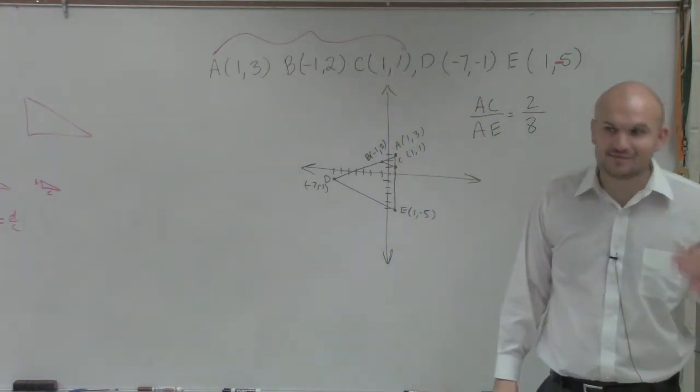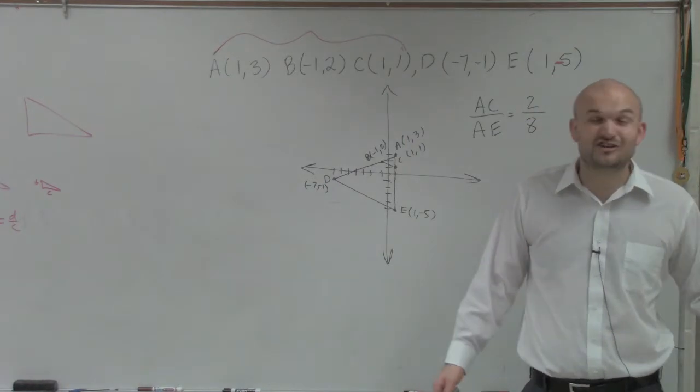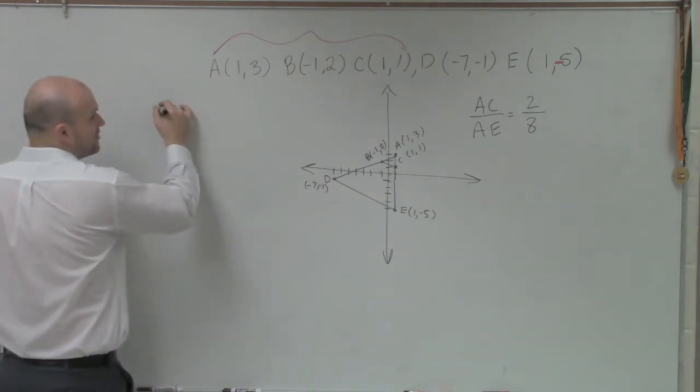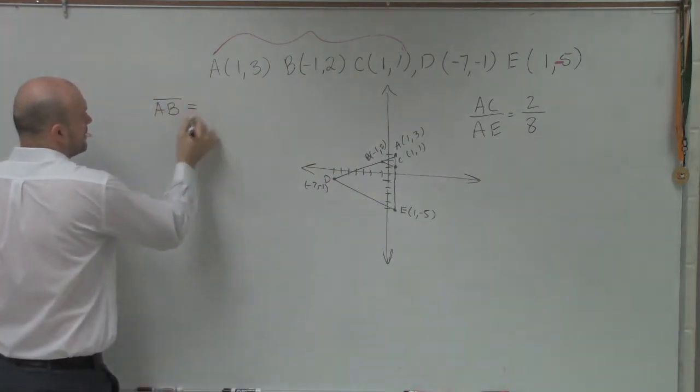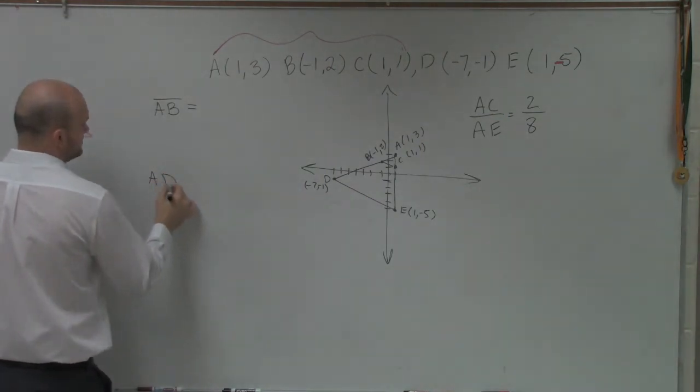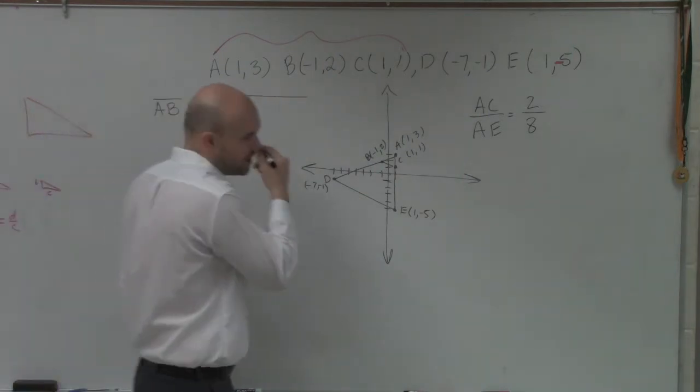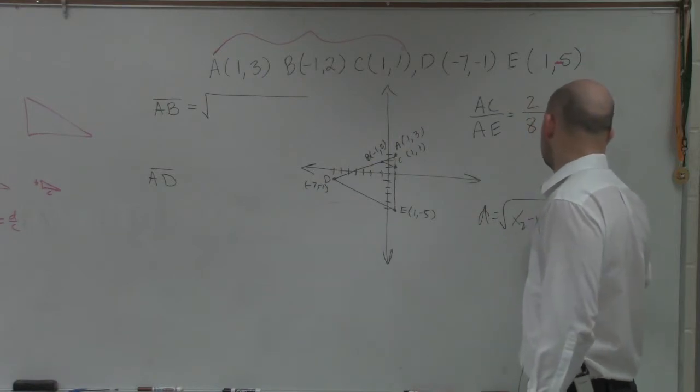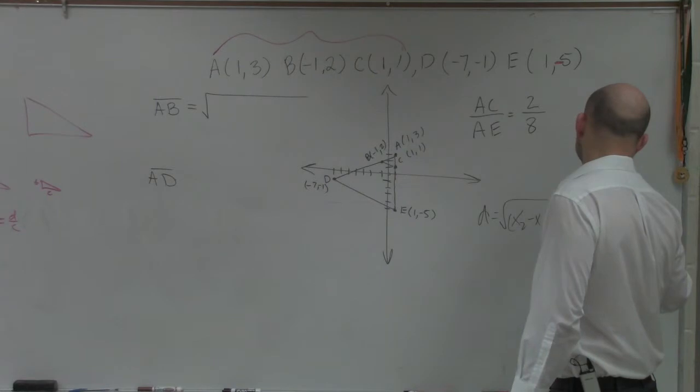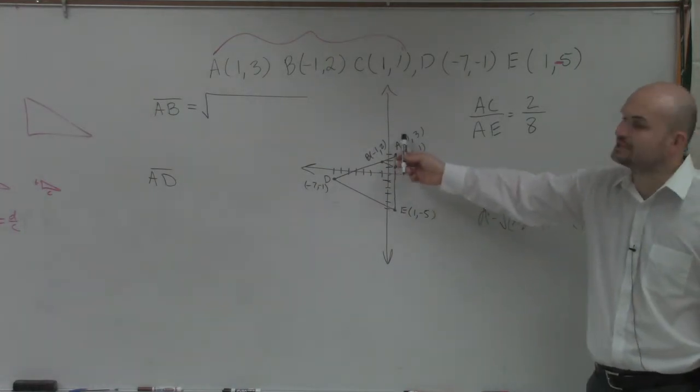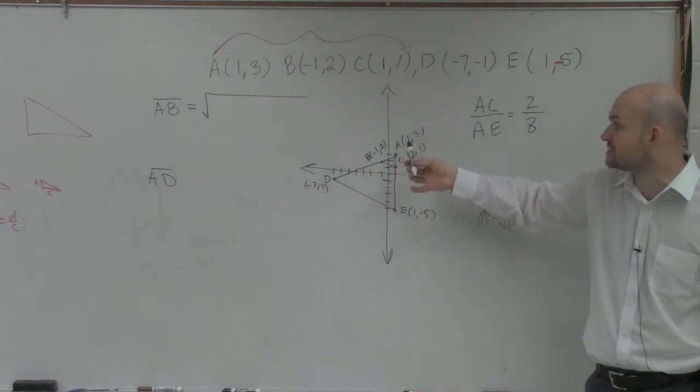And hopefully at this point in the class, you guys have done the distance formula enough that you're sick of it, but you at least know the distance formula. So we're going to find the distance formula of AB and we're going to find the distance formula of AD. So if you do not remember the distance formula, remember the distance formula equals the square root of x2 minus x1 squared plus y2 minus y1 squared. Now, ladies and gentlemen, it does not matter what I label as x1 and x2. All I'm going to do is I'm just going to subtract the x coordinates. I'm going to start with the A first.